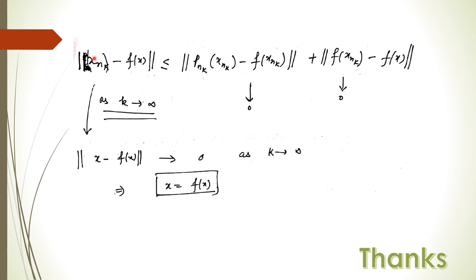Since each P_N has a fixed point, X_{N_k} = P_{N_k}(X_{N_k}). By the triangle inequality, ‖X_{N_k} − F(X)‖ ≤ ‖P_{N_k}(X_{N_k}) − F(X_{N_k})‖ + ‖F(X_{N_k}) − F(X)‖. The first term is less than 1/N_k → 0 as k → ∞, and the second term also goes to 0 since X_{N_k} → X and F is continuous. Therefore ‖X − F(X)‖ = 0, which implies X = F(X), so F has a fixed point in K. This completes the proof of the theorem.